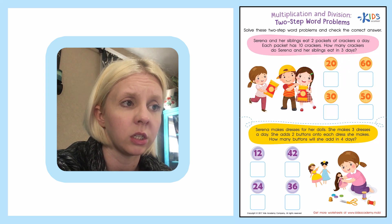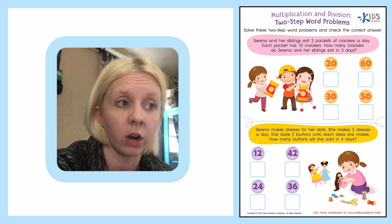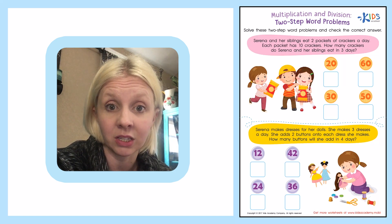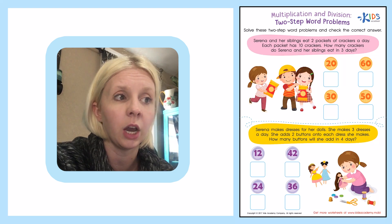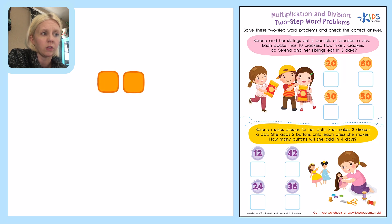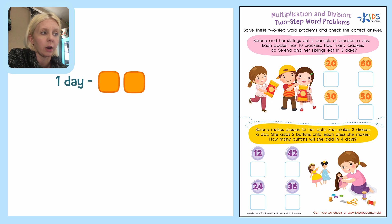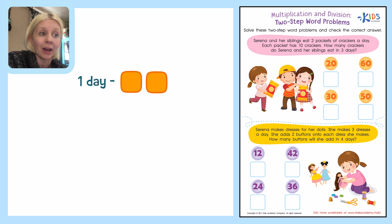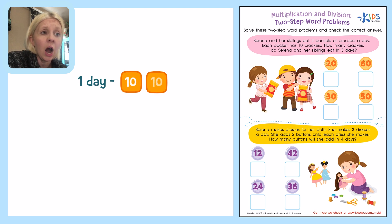Let's start with the first sentence: Serena and her siblings eat two packets of crackers a day. What I like to do is draw out a picture to help me understand and organize what I'm reading. So it says they eat two packets of crackers — we'll pretend this is a packet of crackers and there's two of them, and they eat that in a day. So this is for one day. Then it says each packet has ten crackers in them, so inside these there's going to be ten crackers total. How many crackers do Serena and her siblings eat in three days?